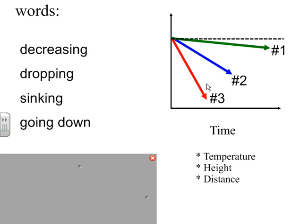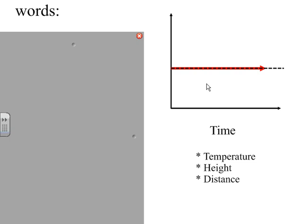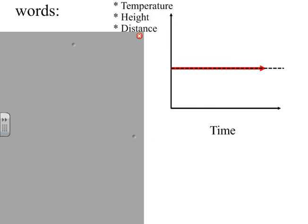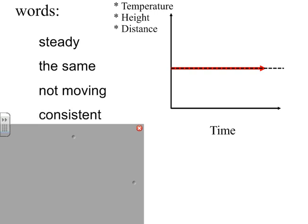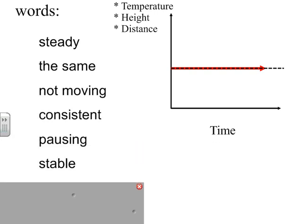So we talked about going up and going down. Let's talk about when something is just straight across. And if we use our terms of temperature, height, and distance, when something is straight, we're basically saying that it's steady, that it's the same, that it's not moving. It's consistent. It's pausing. It's stable. We're not seeing anything happen to the line. It is holding steady.